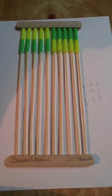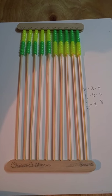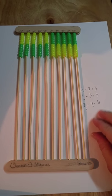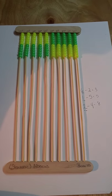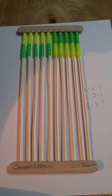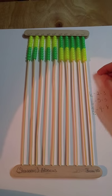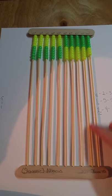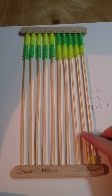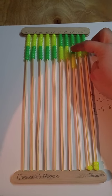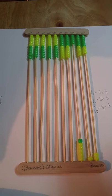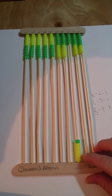Our next problem is going to be subtracting with base 10. I've written out the problem and worked out the answer, but I'm going to show you how I got it. The first thing we're going to do is represent 612 — we need two ones, one 10, and 600.